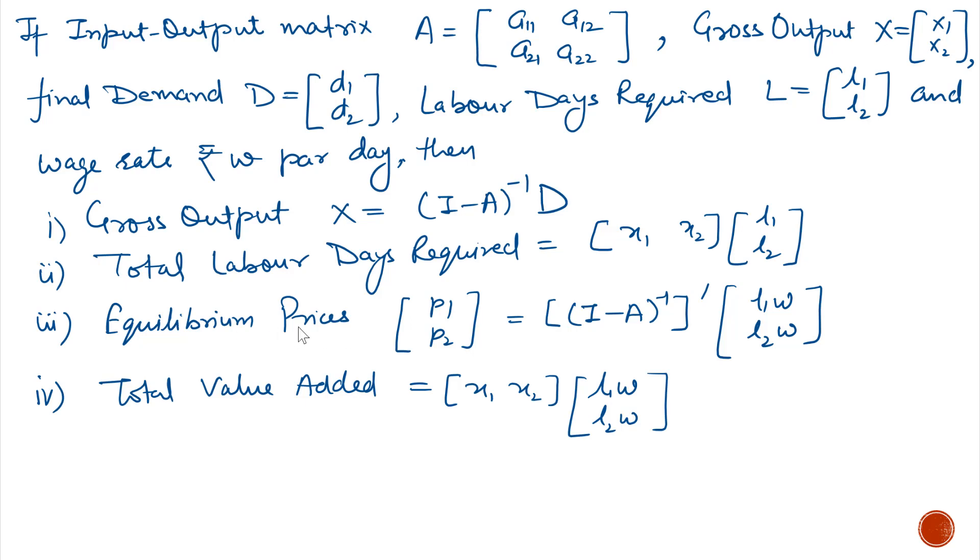Next, equilibrium prices, denoted by P1, P2, equals (I minus A) inverse transpose multiplied by L1W, L2W. And total value added equals output transpose X1, X2 multiplied by L1W, L2W.